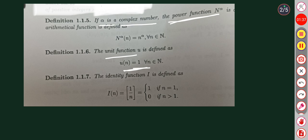Next definition: the identity function. The identity function I is defined as I of n equals the greatest integer function — specifically, I of n equals 1 if n equals 1, and I of n equals 0 if n is greater than 1.